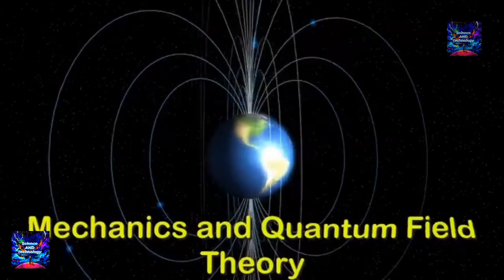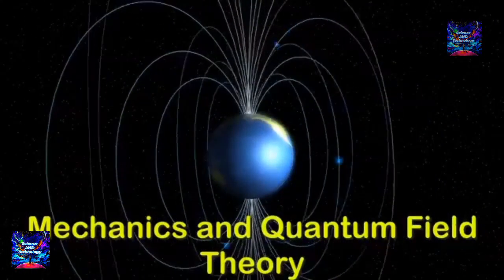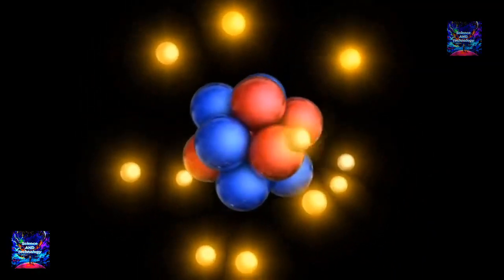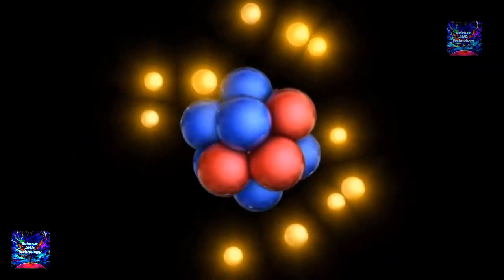There's quantum mechanics, the basic mathematical framework that underpins it all, which was first developed in the 1920s by Niels Bohr, Werner Heisenberg, Erwin Schrödinger and others. It characterizes simple things such as how the position or momentum of a single particle or group of few particles changes over time.